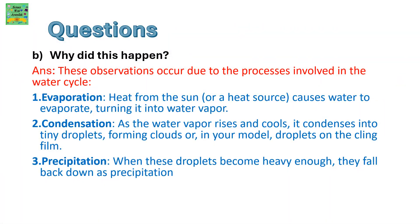Why did this happen? The observations occur due to the processes involved in the water cycle. Evaporation: the heat from the sun or the heat source causes the water to evaporate, turning it into water vapour. Condensation: as the water vapour rises and cools, it condenses into tiny droplets, forming clouds — or in your model, droplets on the cling film. Precipitation: when these droplets become heavy enough, they fall back as precipitation or rain.